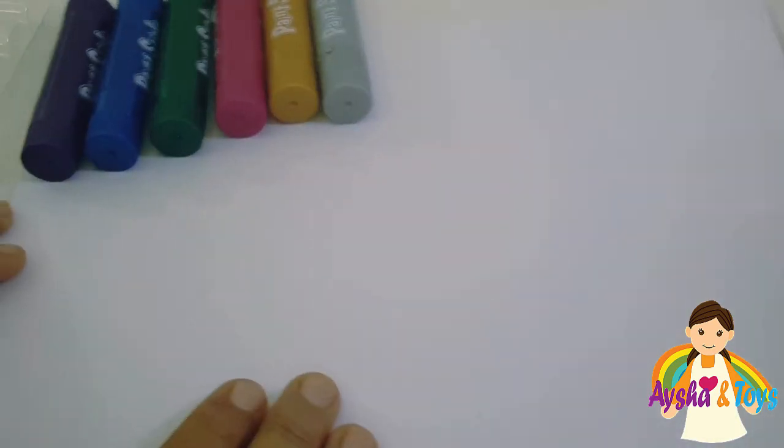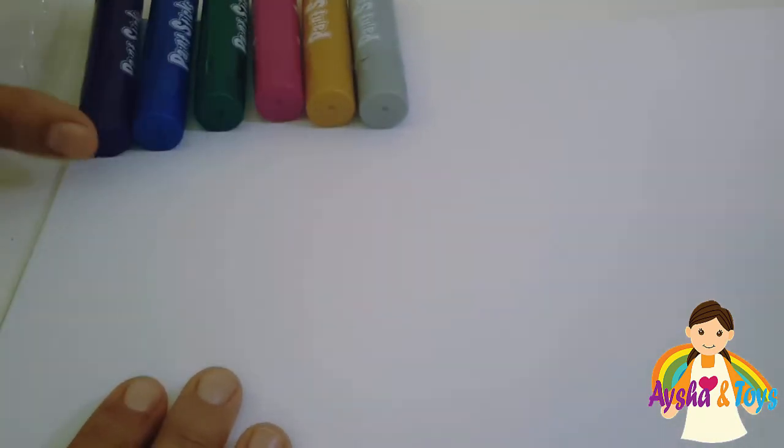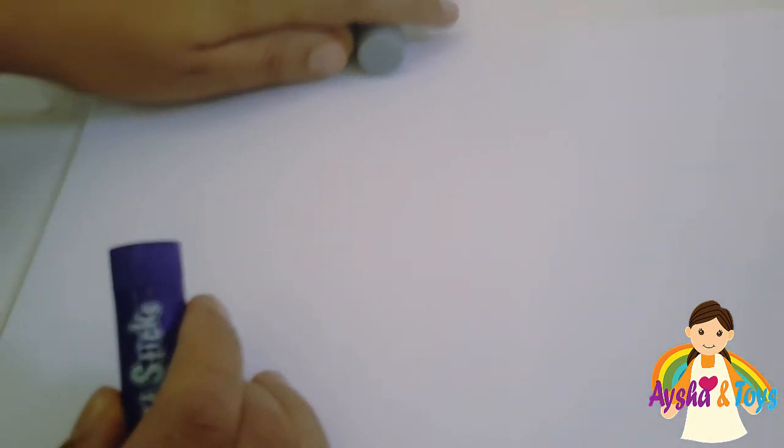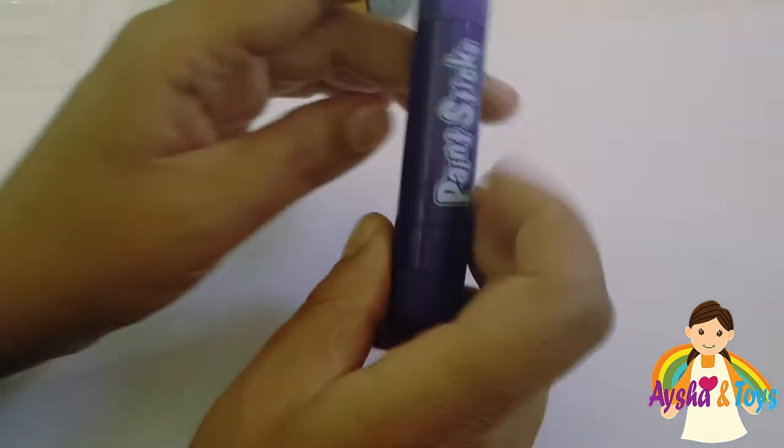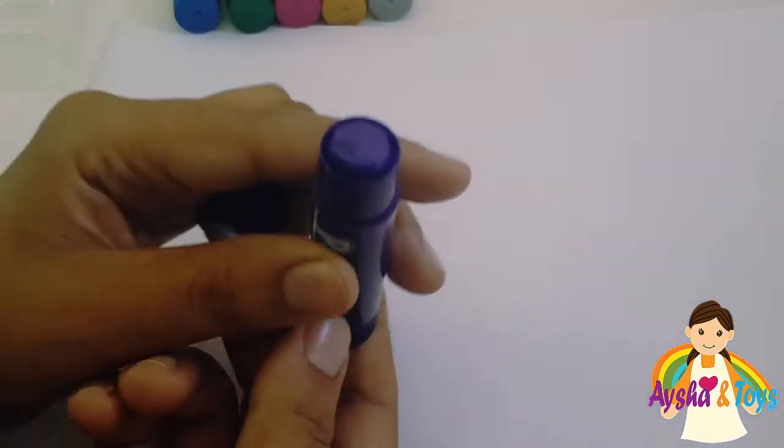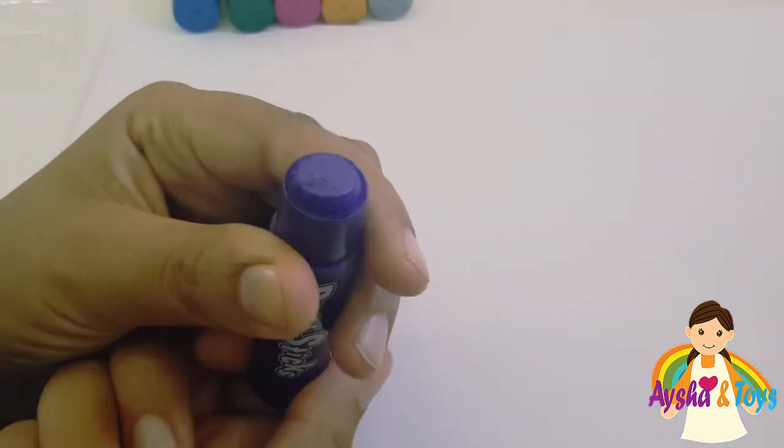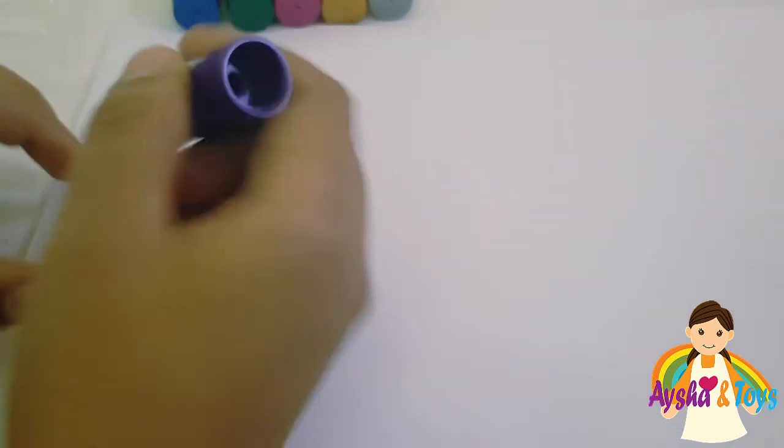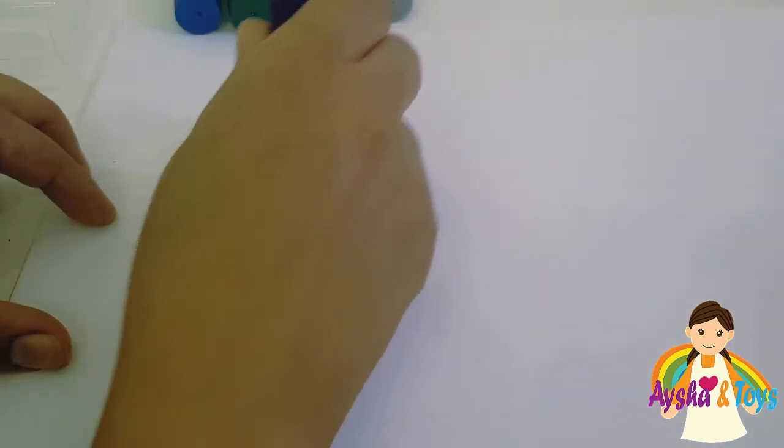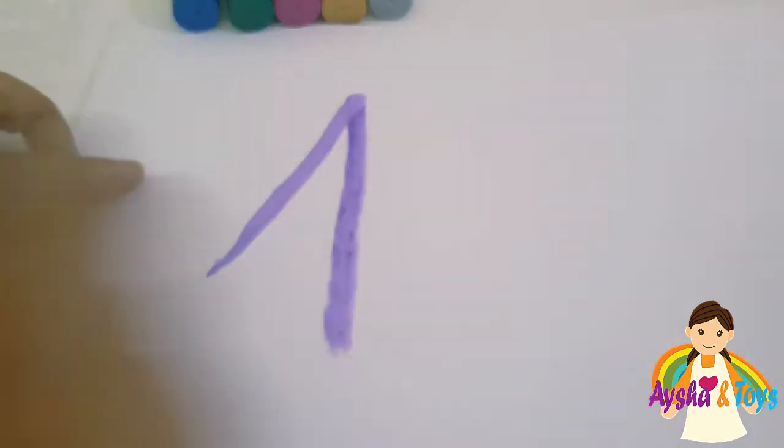We'll start, which number will start by number 1? Yes. It starts by purple. This is purple color. We'll write. Here we have purple color. Purple. We'll write. One.